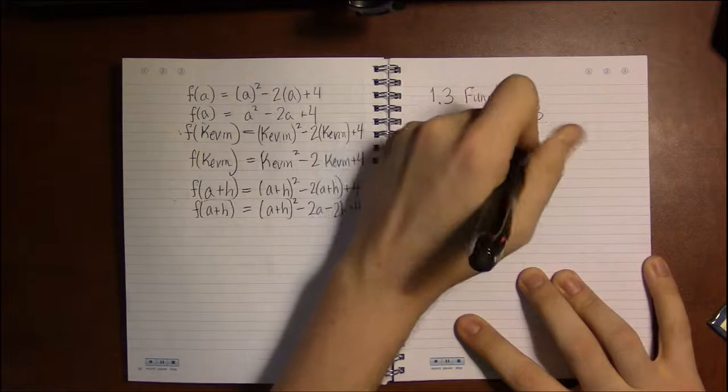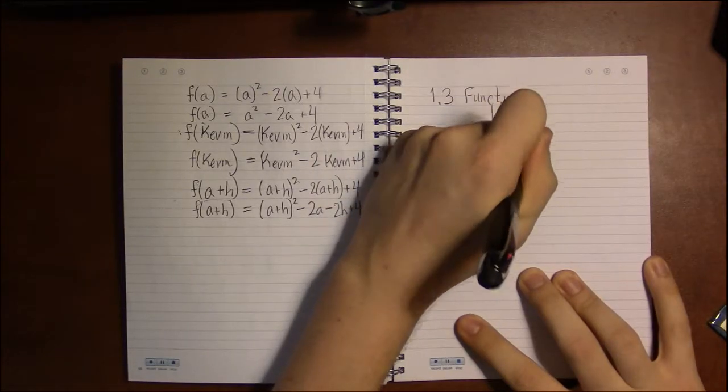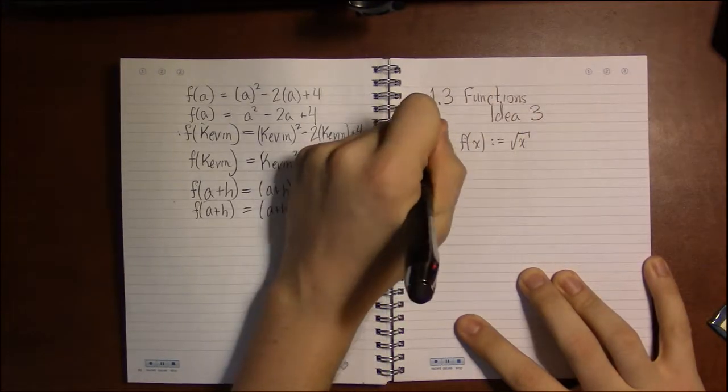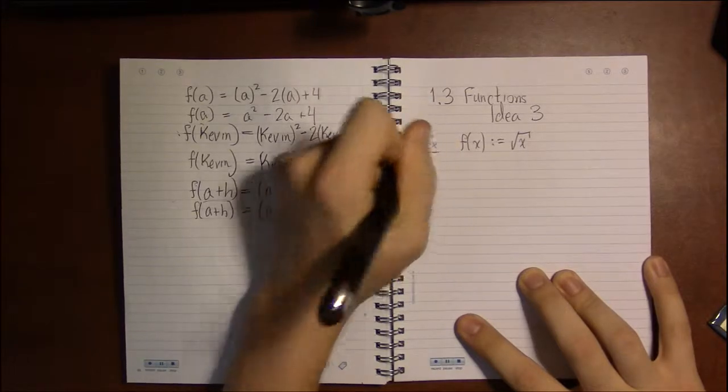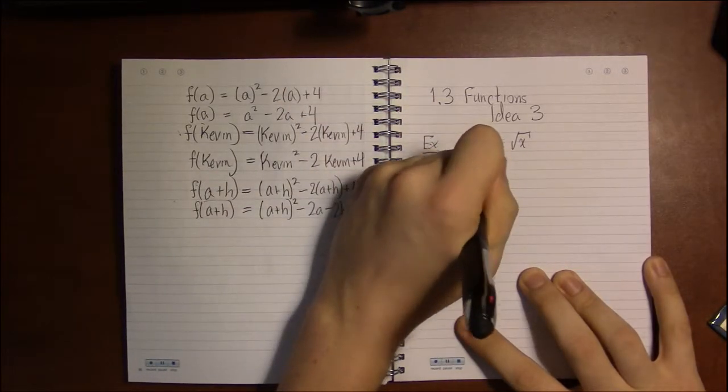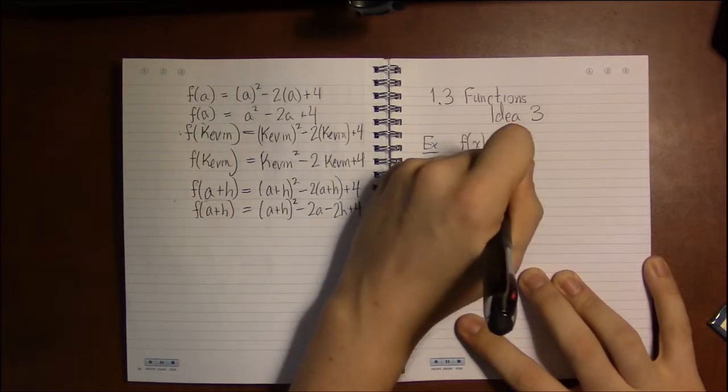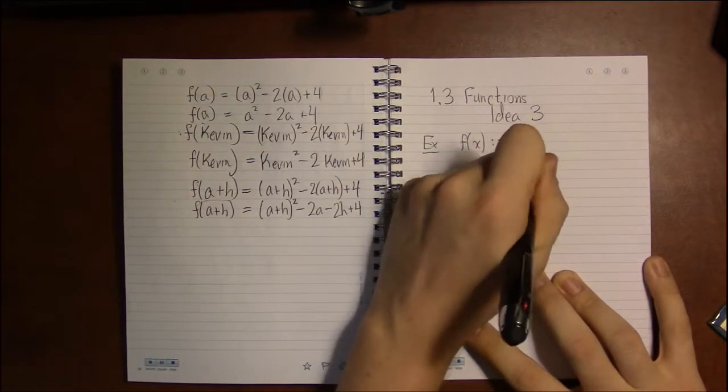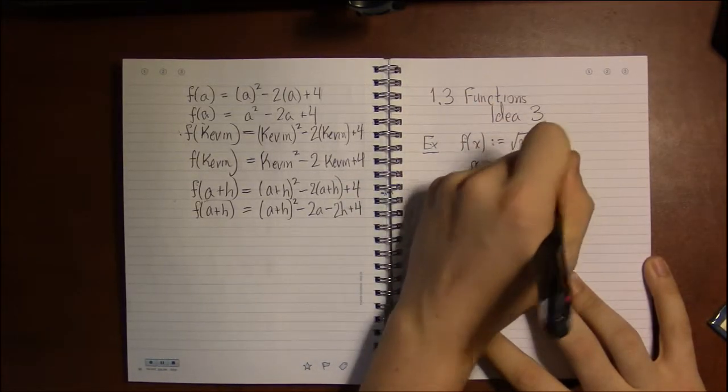So let's define f(x) to be the square root of x. Now, I can evaluate it at 1 and get a perfectly reasonable answer. Square root of 1 is just 1.